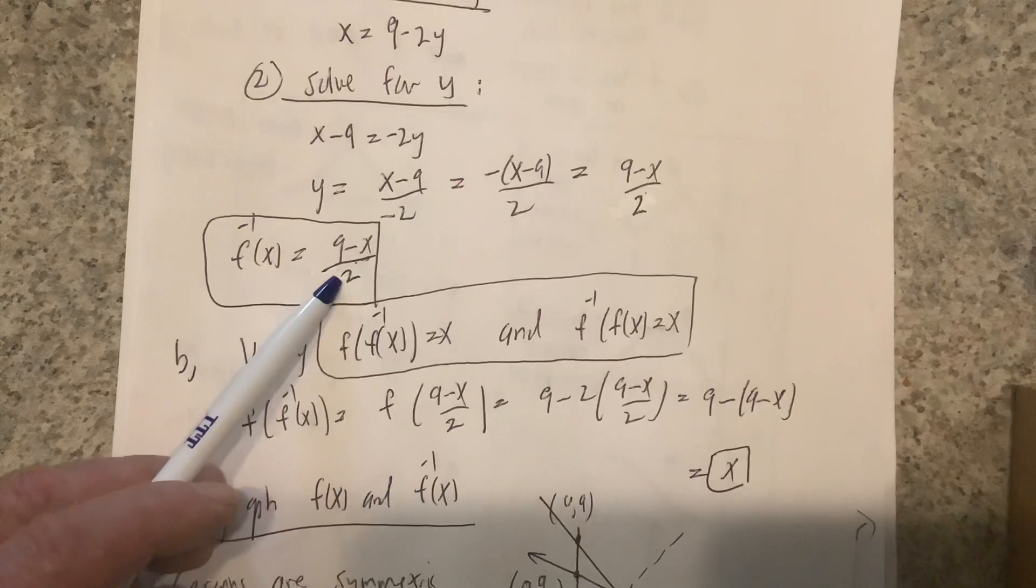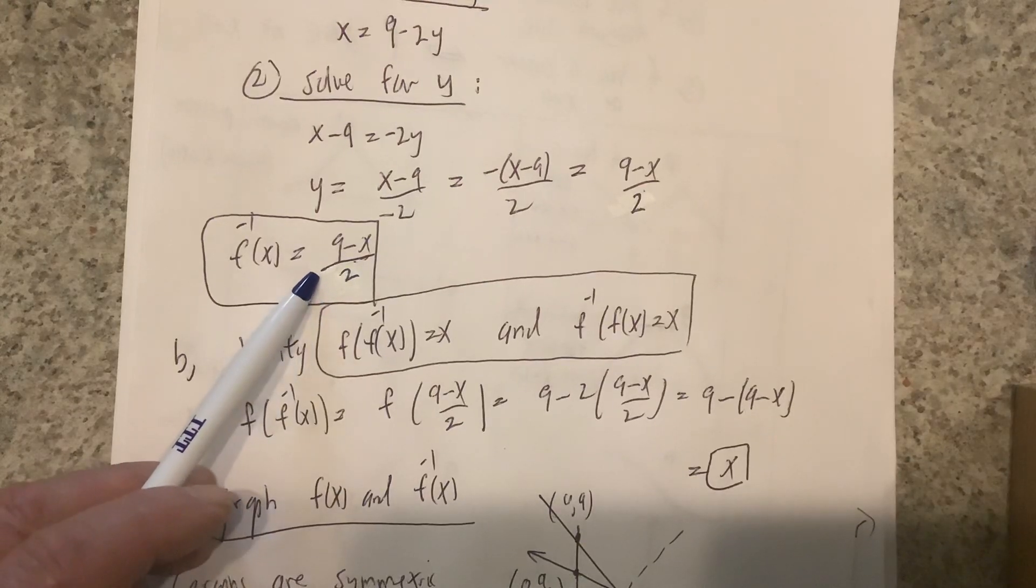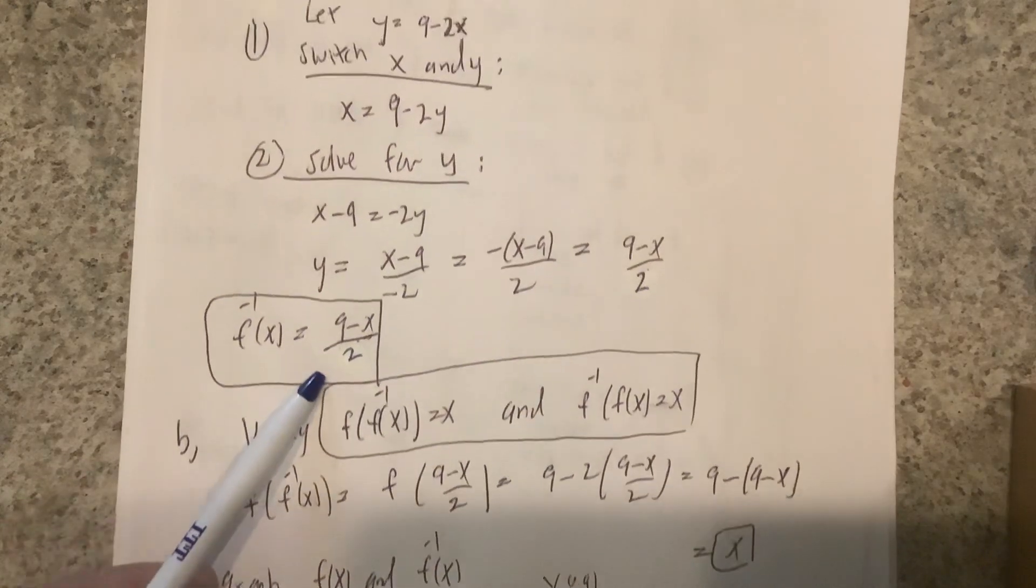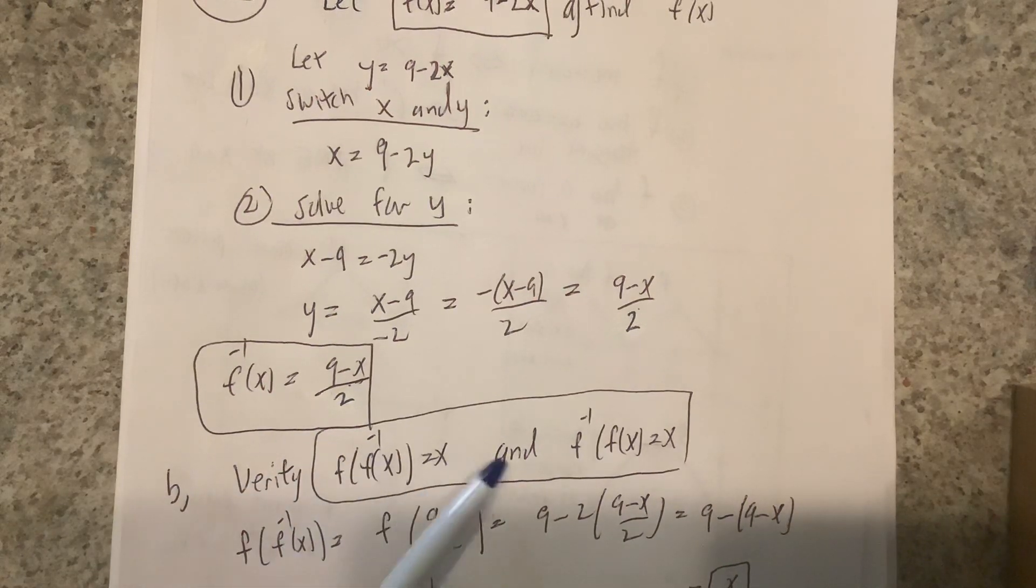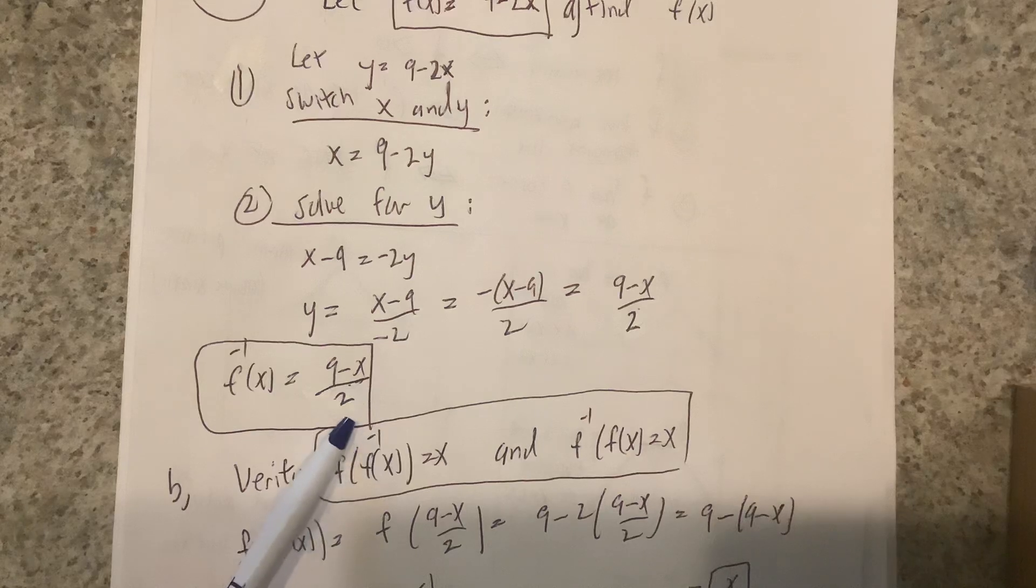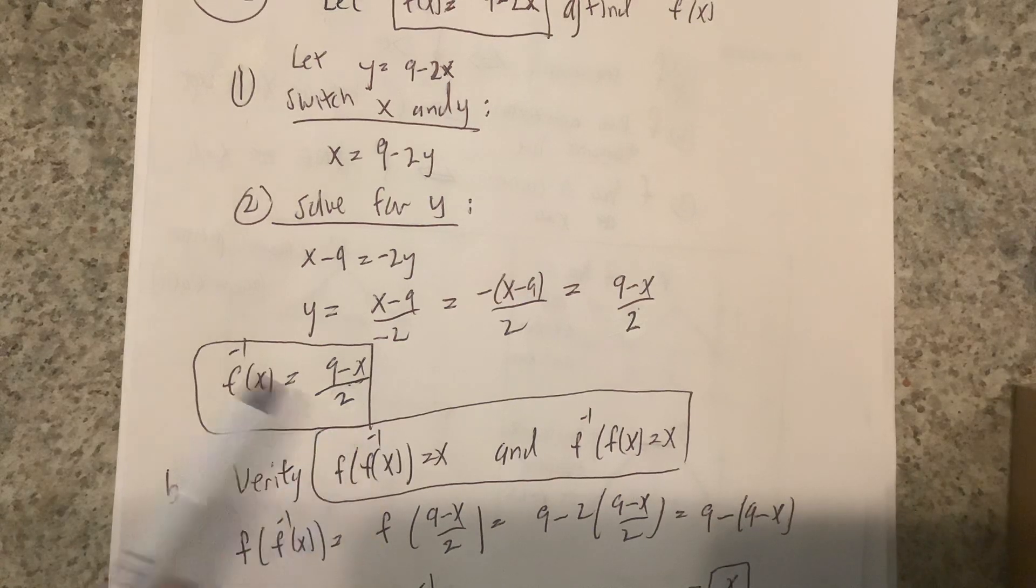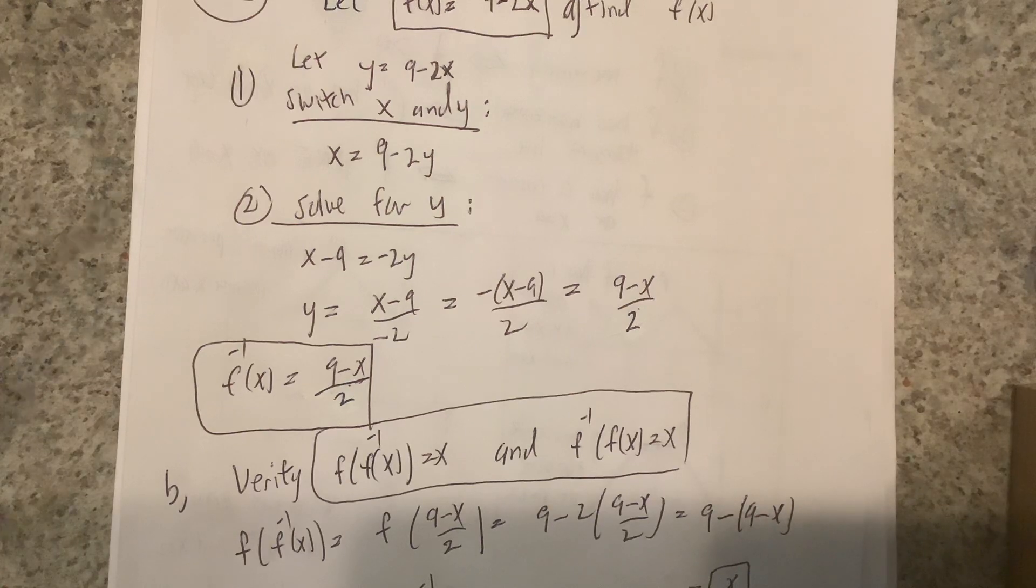Now a couple more things. One property that inverse functions have is whenever you form the composition of a function with its inverse function, you always get x. And again, you can see that better if you look at tables and you look at what happens. Whenever you take f of f inverse of, say, two on a table, you'll see that you always get back to where you started.